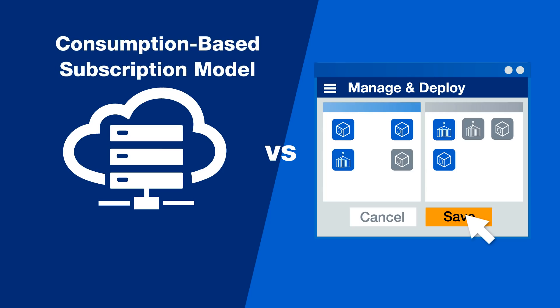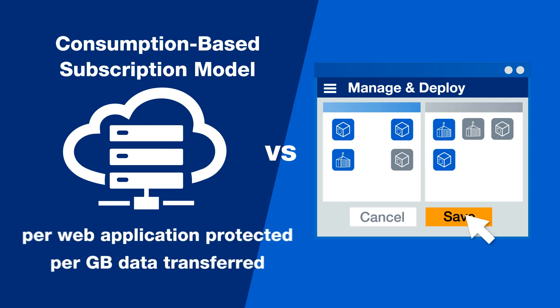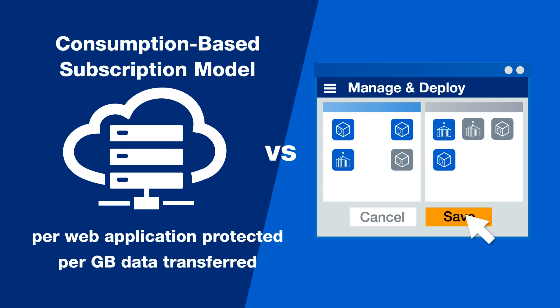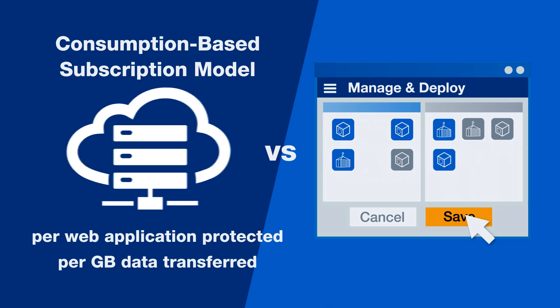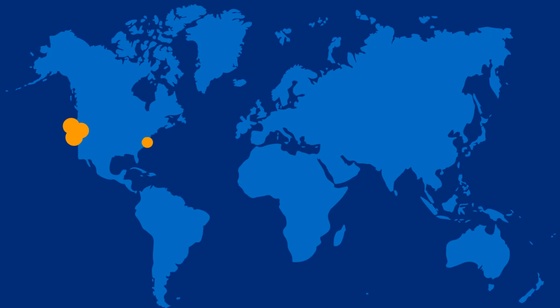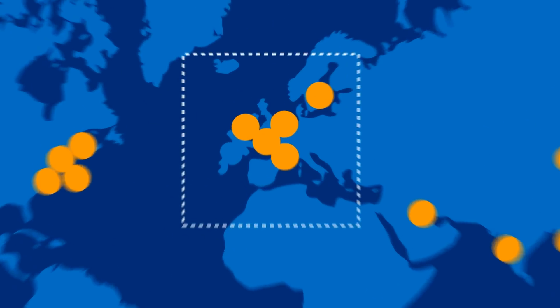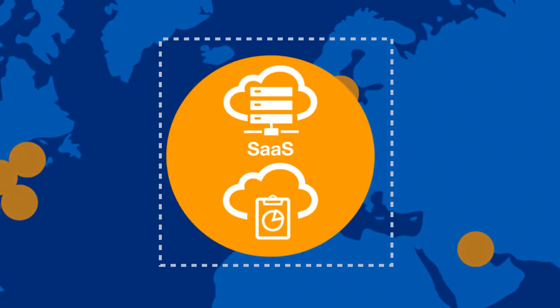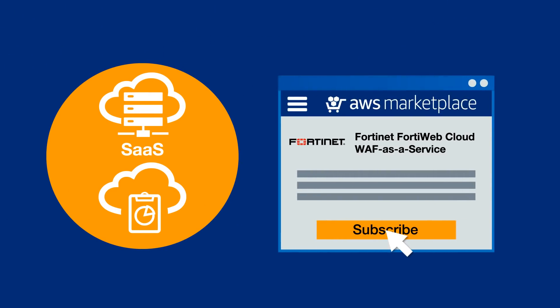Pay only based on what you use. FortiWeb SaaS is a cloud-native solution deployed in the same AWS region as your own application. With its built-in setup wizard, you're up and running in just minutes.